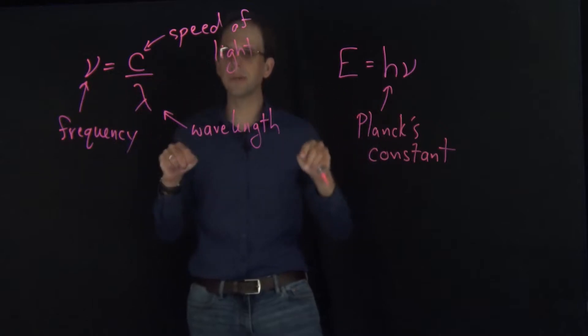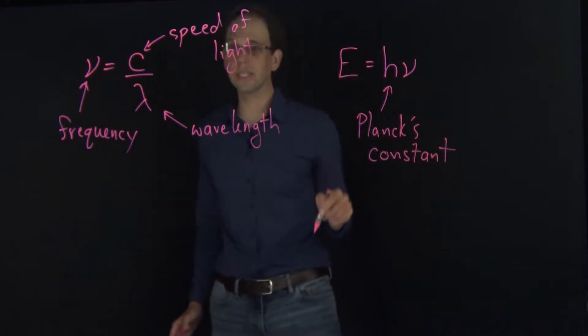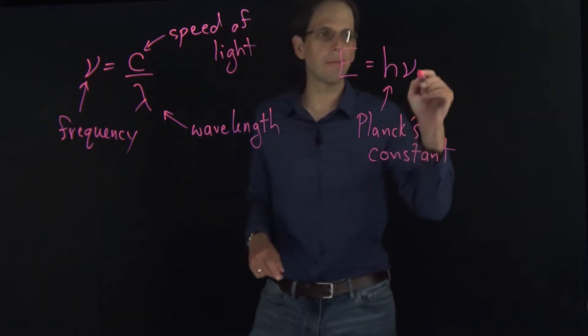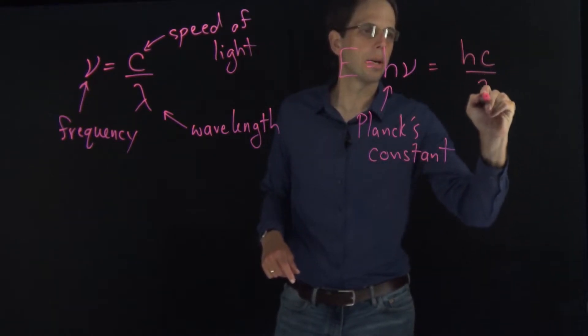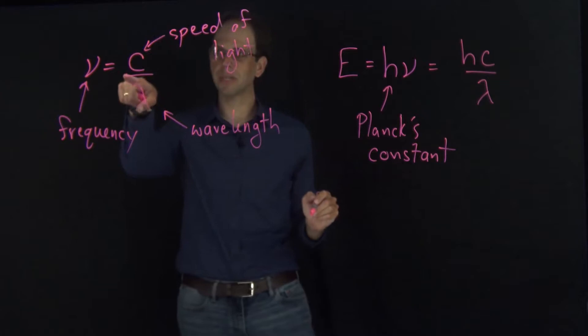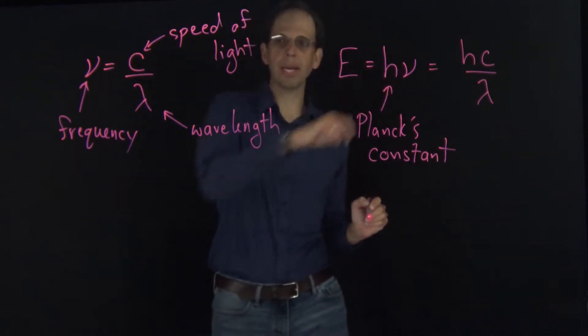Now I can combine these two expressions, if needed, to write the energy in terms of the wavelength, and I get E is equal to hc over lambda, just by substituting this expression for nu in right here.